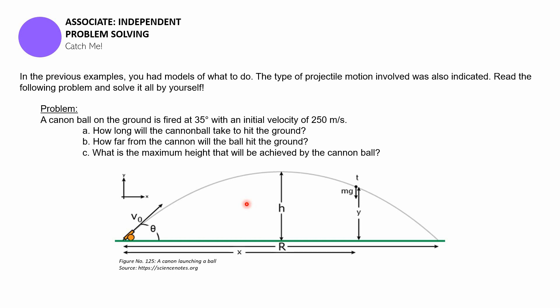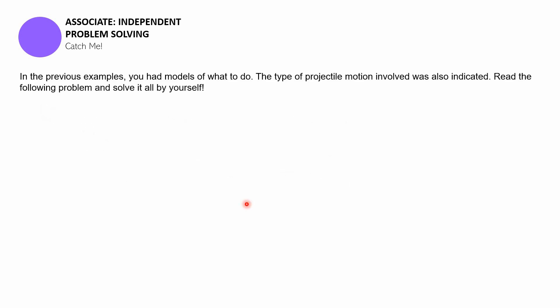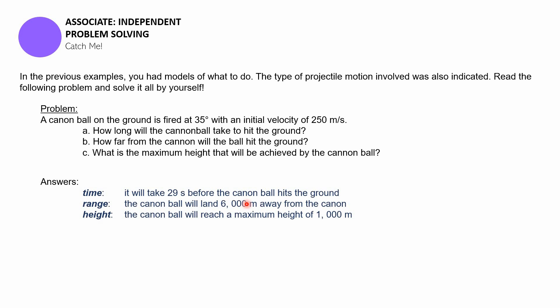Are you through? Okay, so the following are the answers to this problem. So for the time, it will take around 29 seconds before the cannonball hits the ground and then the range or the DX, which is the total amount of distance from the launching site to the landing site will be around 6,000 meters away from the cannon.